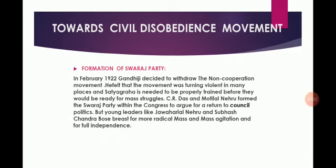Within the Congress, some leaders were tired of mass struggle and wanted to participate in elections to the provincial councils set up by the Government of India Act of 1919. They felt it was important to oppose British policies within the councils, argue for reform, and demonstrate that these councils were not truly democratic. C.R. Das and Motilal Nehru formed the Swaraj Party within Congress to argue for a return to council politics, but younger leaders like Jawaharlal Nehru and Subhash Chandra Bose pressed for more radical mass agitation and full independence.